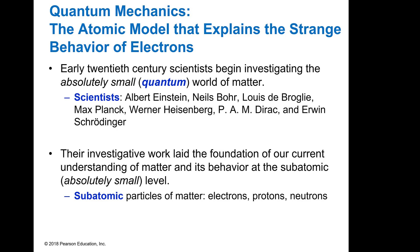In the 20th century, scientists were going through a lot of changes in chemistry and physics, and they began investigating the quantum world of matter — that tiny, tiny world that we can't see. Those scientists included Albert Einstein, Niels Bohr, de Broglie, Max Planck, Heisenberg, Dirac, and Schrödinger. These were the main guys doing the cutting-edge work on the behavior of electrons, and our foundation is set up by them through the discovery and descriptions of these subatomic particles of matter.